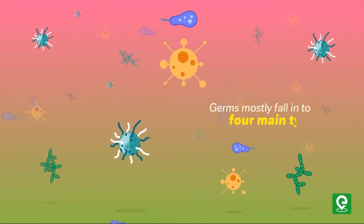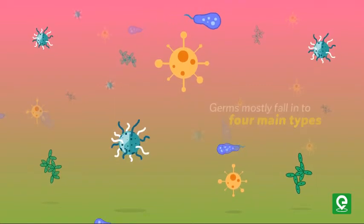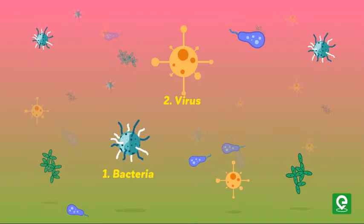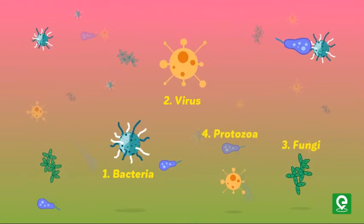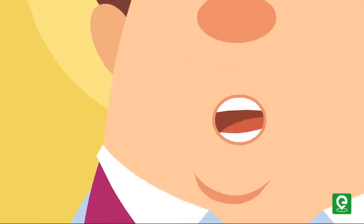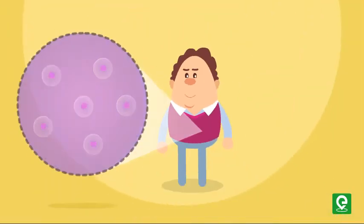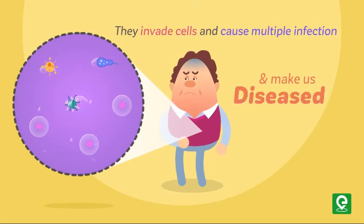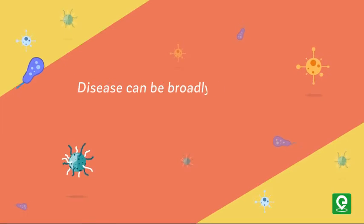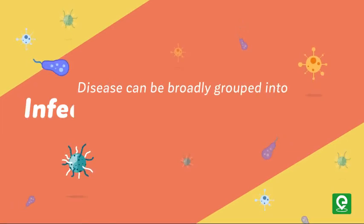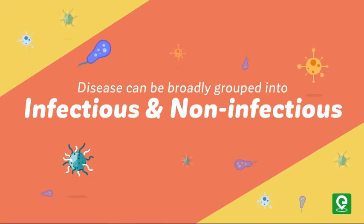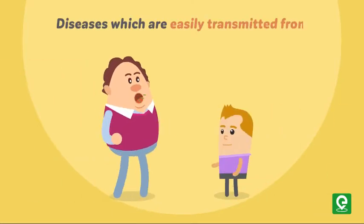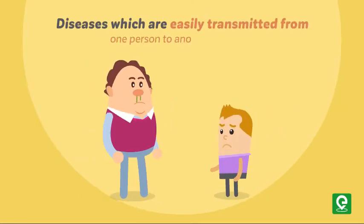But it depends upon exactly which type of germs you're dealing with. Germs mostly fall into four main types: bacteria, viruses, fungi, and protozoa. When these germs enter the body, they invade cells and cause multiple infections and make us diseased. Disease can be broadly grouped into infectious and non-infectious.